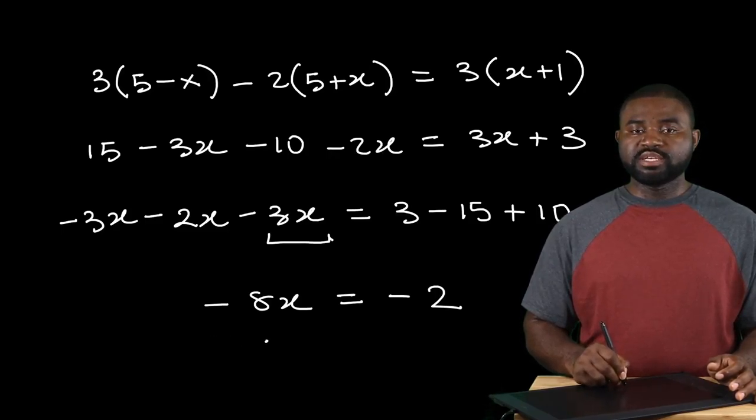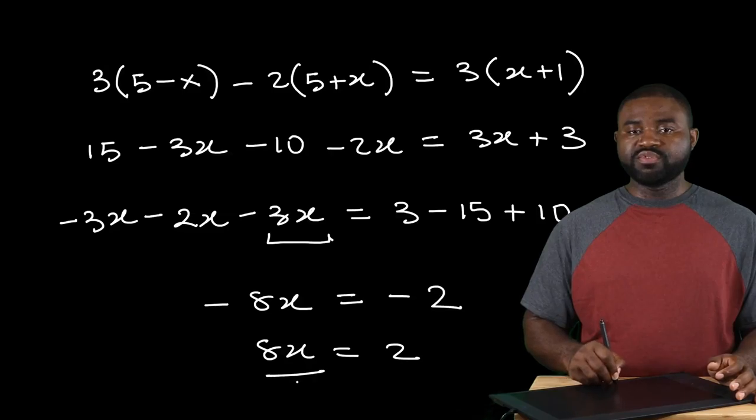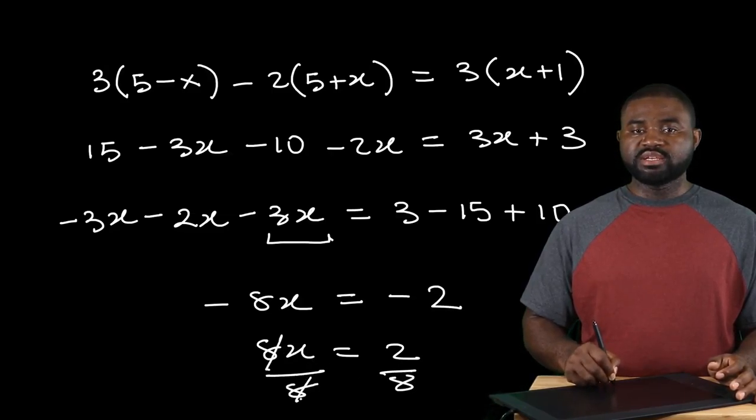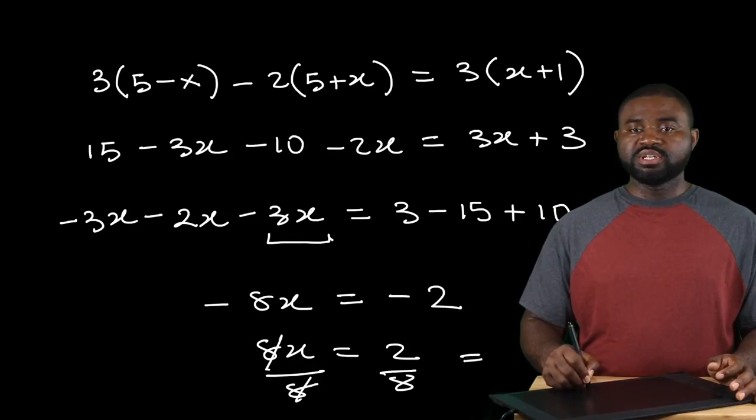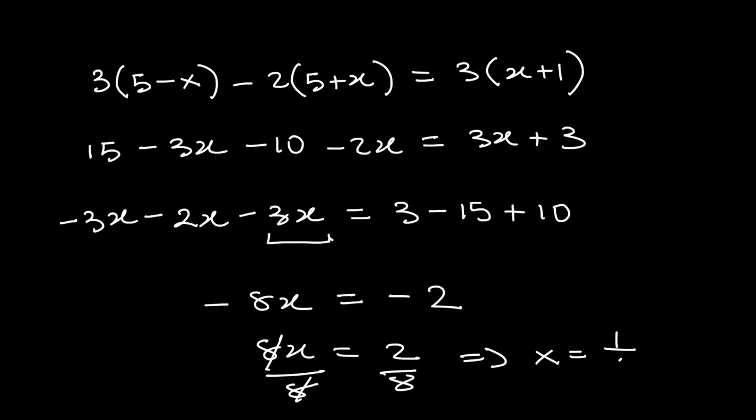So you will realize that negative 8x is equal to negative 2. So if you divide both sides by negative 8, this would mean that x is going to be equal to 1 over 4. This gives us the value for x. This was a beautiful one.